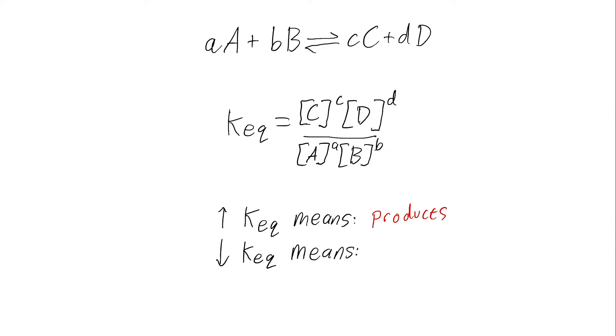On the other hand, if you have a low equilibrium constant, this means that the reaction lies mostly on the side of the reactants.